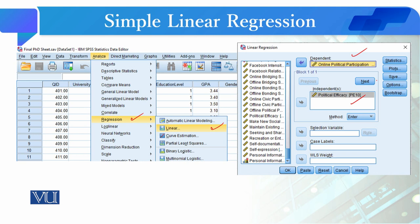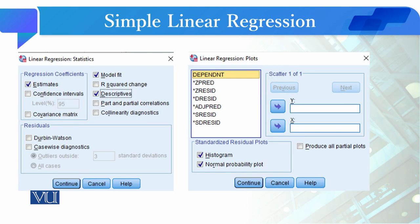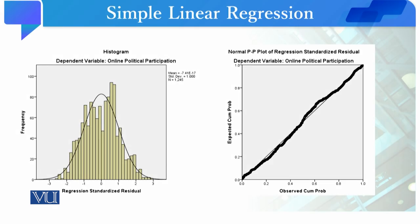After selecting linear regression, for the variables on which we want to conduct this test — for example, I want to see the relationship between online political participation and political efficacy, assuming political efficacy as an independent variable and online political participation as a dependent variable. Then I will click on Statistics and select model fit, descriptives, estimates, and from Plots I will select histogram and normal probability plot.